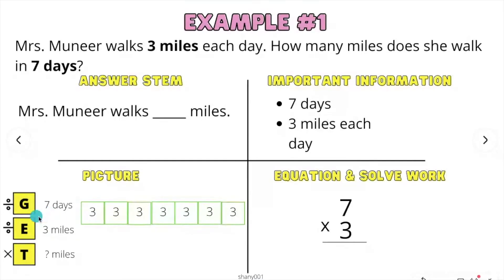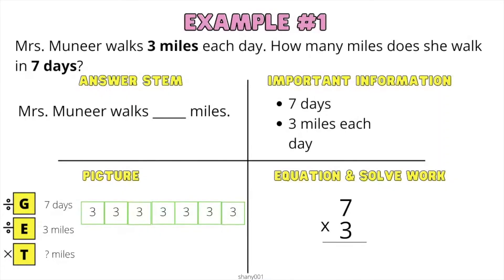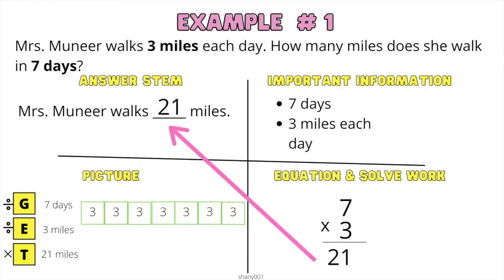Seven days is the groups — one, two, three, four, five, six, seven. I went ahead and put three miles in each box. You can go ahead and put circles, stars, or any shape. So our equation is seven times three equals twenty-one. Mrs. Muneer walks twenty-one miles.